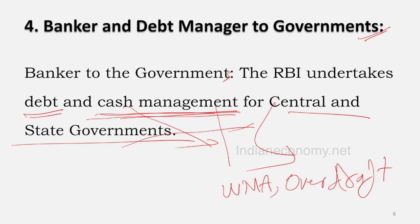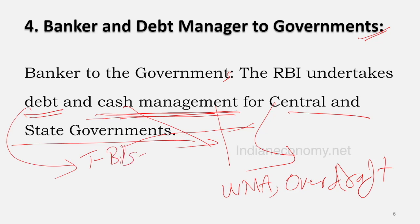RBI also acts as debt manager for the Government of India and state governments. On behalf of the government, RBI issues government securities like treasury bills and government bonds (dated securities). Note that state governments do not issue treasury bills — only the central government does.